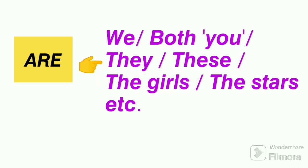Now we have are, which is used with both singular and plural number you, and other plural subjects like we, they, these, the girls, the stars, etc.